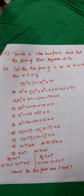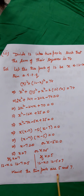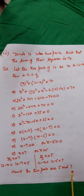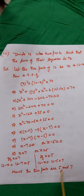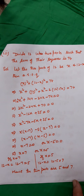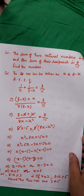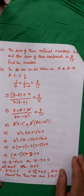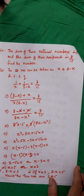We can verify: the sum of squares must be 74. 5² = 25 and 7² = 49; 25 + 49 = 74. Hence our answer is correct.